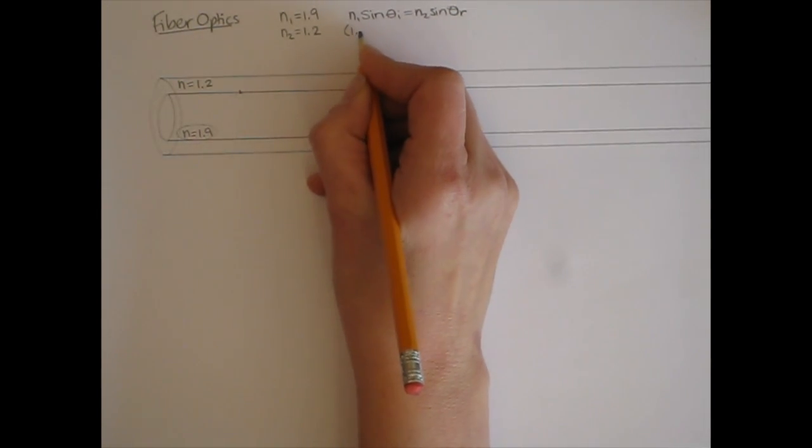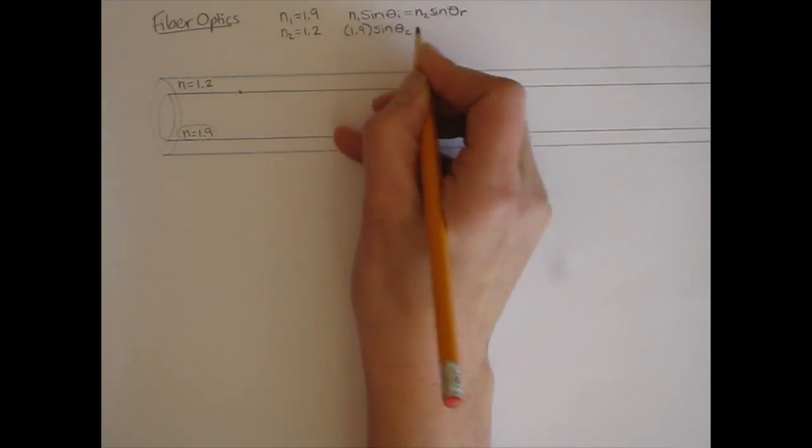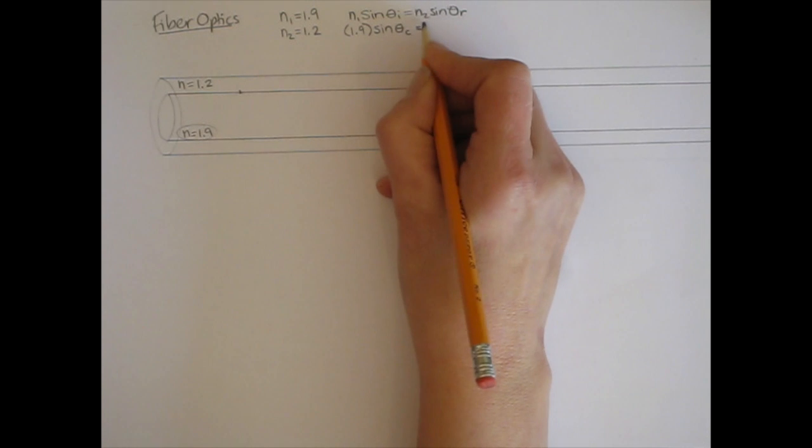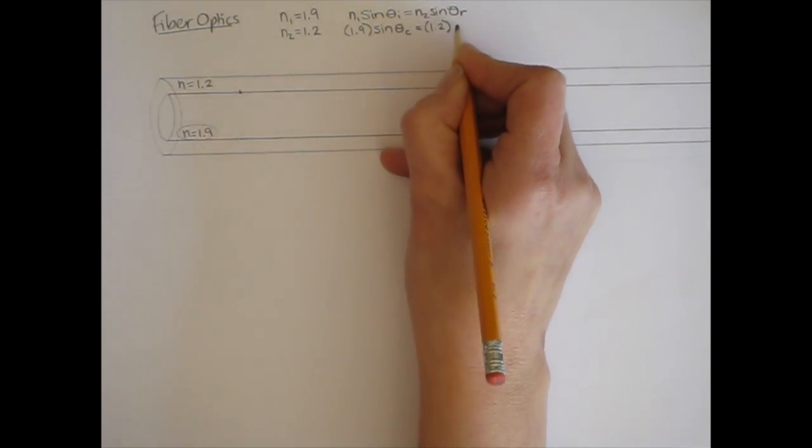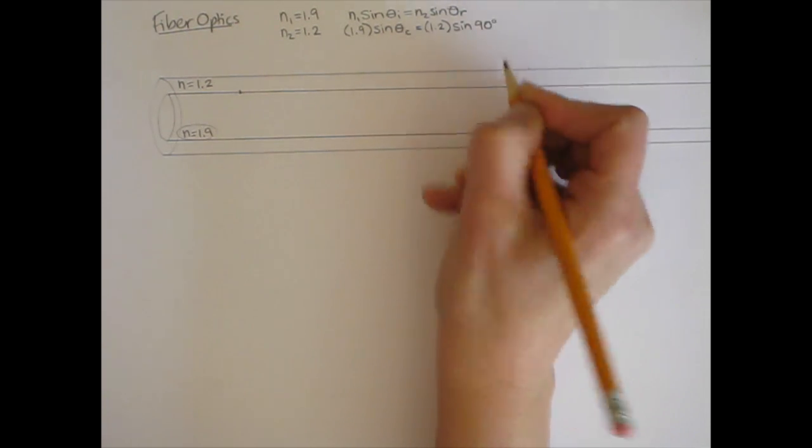So N1 is 1.9. My incident angle is the critical angle. N2 is 1.2 and the critical angle causes a refracted angle of 90 degrees.